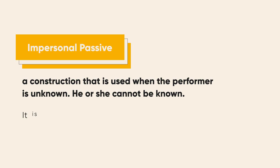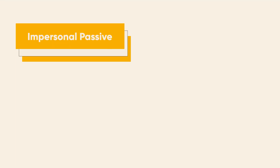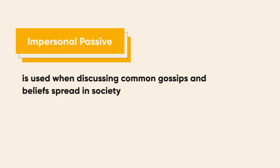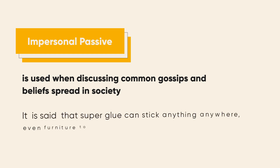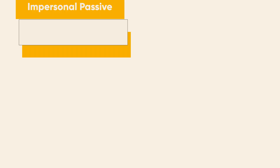For example: 'It is said.' 'It is rumored.' Who gossips? We don't know and it doesn't matter. Impersonal passive is used when discussing common gossips and beliefs spread in society. For example, 'It is said that super glue can stick anything anywhere, even furniture to the ceiling.'